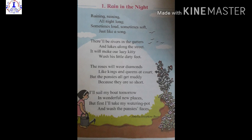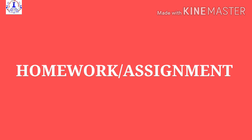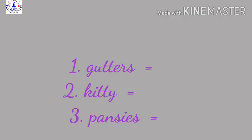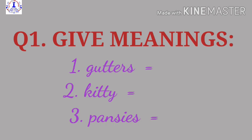So children, this is your first poem from Balbharti textbook Unit 1, 'Rain in the Night.' Hope you have understood the poem. As you all are at home with plenty of time, I am giving you some homework based on this poem. Question number 1: Give meanings of — 1) gutters, 2) kitty, 3) pansies. You need to give me the meanings for these three words.